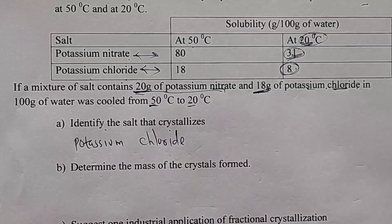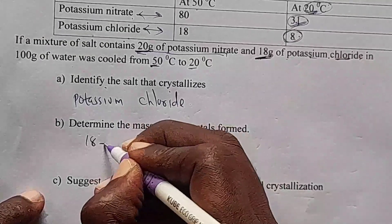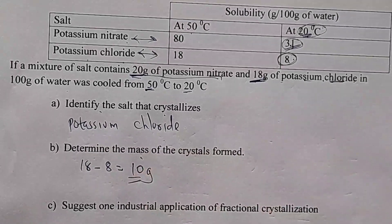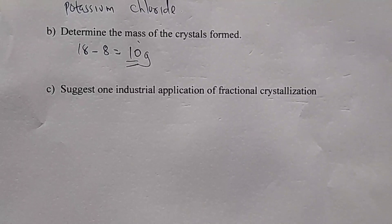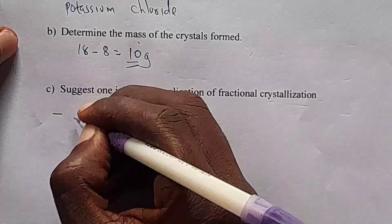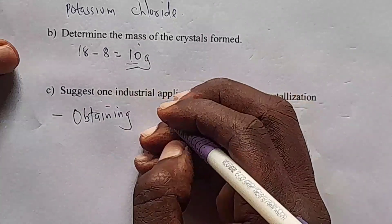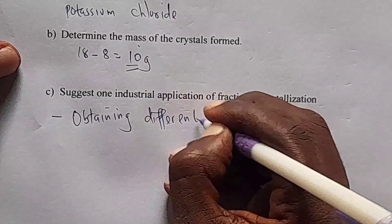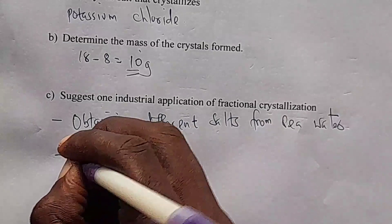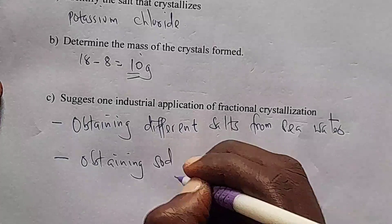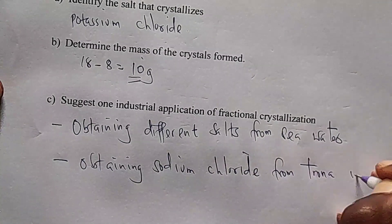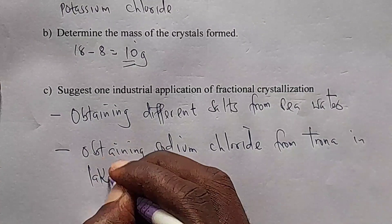The mass of crystals formed is 18 minus 8 equals 10 grams of potassium chloride. One real-world application of fractional crystallization is obtaining different salts from seawater, or obtaining sodium chloride from Lake Magadi.